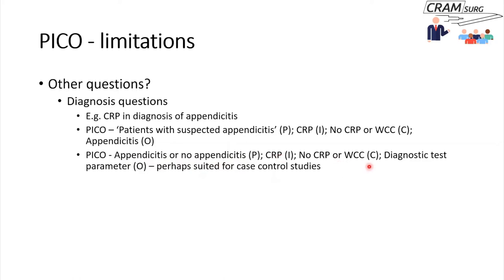The intervention and comparator are the same as before: CRP would be your intervention and white cell count would be your comparator. The outcome here would be a diagnostic test parameter like sensitivity, specificity, predictive values, and so on.